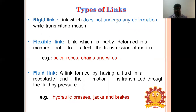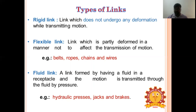A flexible link is a link which is partly deformed in a manner that does not affect the transmission of motion. Examples include belt drive, ropes, chain drives, and wires.